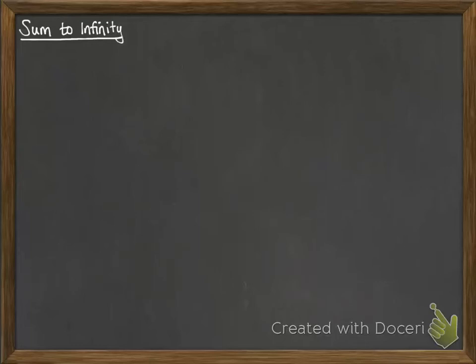Here's a nice little concise section on sum to infinity. This applies to geometric progressions, leading on from the previous lesson. I want you to have a think about this sequence: 1 half, quarter, eighth — as you carry on, that is being reduced, multiplied by a half as you go along.